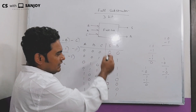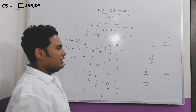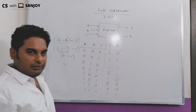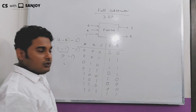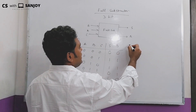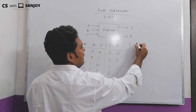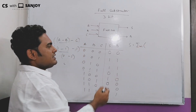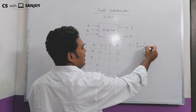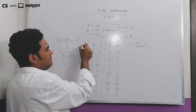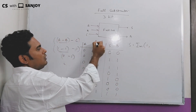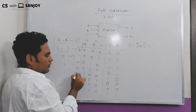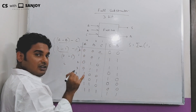Truth table of half and full subtractor. See what happens here: when there is a bit term, A equals the summation of bit terms. So the minterm positions are 1, 2, 4, 5, 6, 7.